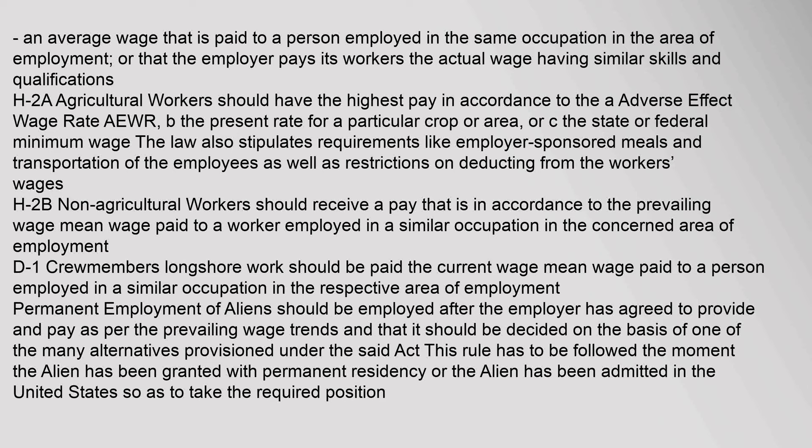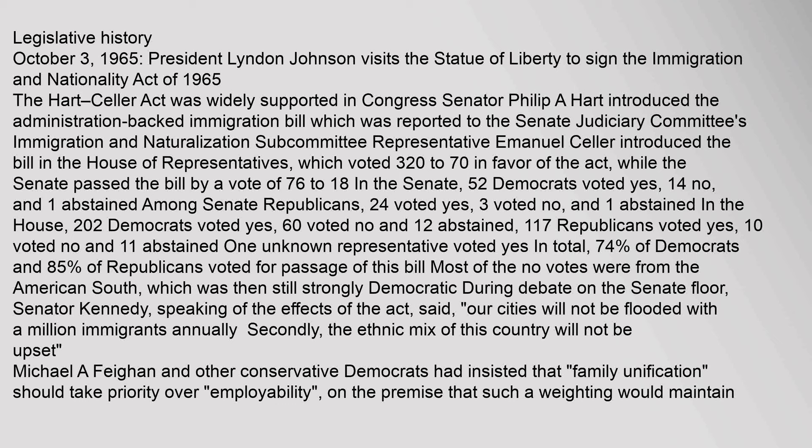Legislative History: On October 3, 1965, President Lyndon Johnson visited the Statue of Liberty to sign the Immigration and Nationality Act of 1965. The Hart-Celler Act was widely supported in Congress. Senator Philip A. Hart introduced the administration-backed immigration bill, and Representative Emanuel Celler introduced the bill in the House of Representatives, which voted 320 to 70 in favor. The Senate passed the bill by a vote of 76 to 18. In the Senate, 52 Democrats voted yes, 14 no, and 1 abstained; among Senate Republicans, 24 voted yes, 3 voted no, and 1 abstained. In the House, 202 Democrats voted yes, 60 voted no, and 12 abstained; 117 Republicans voted yes, 10 voted no, and 11 abstained. In total, 74% of Democrats and 85% of Republicans voted for passage. Most of the no votes were from the American South, which was then still strongly Democratic.